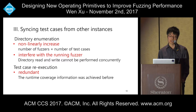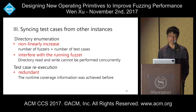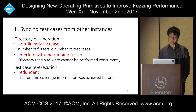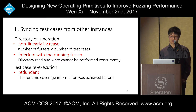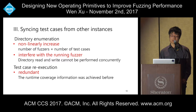The third step is syncing test cases from other instances in parallel fuzzing. First, directory enumeration: as more fuzzers run and more test cases accumulate, the time to perform directory enumeration increases non-linearly, and reading one fuzzer's directory interferes with the other because directory read and write cannot be performed concurrently. Second, re-executing test cases from other fuzzers is redundant because the runtime coverage information has already been obtained by those fuzzers.